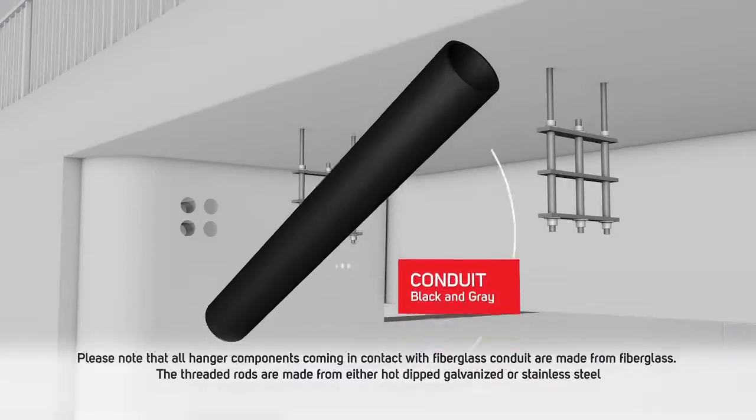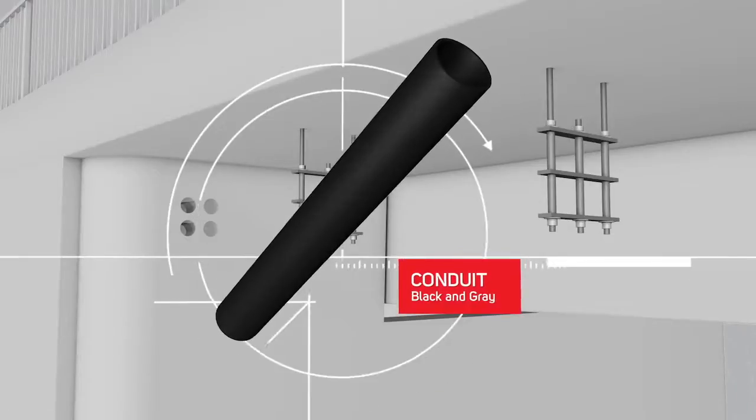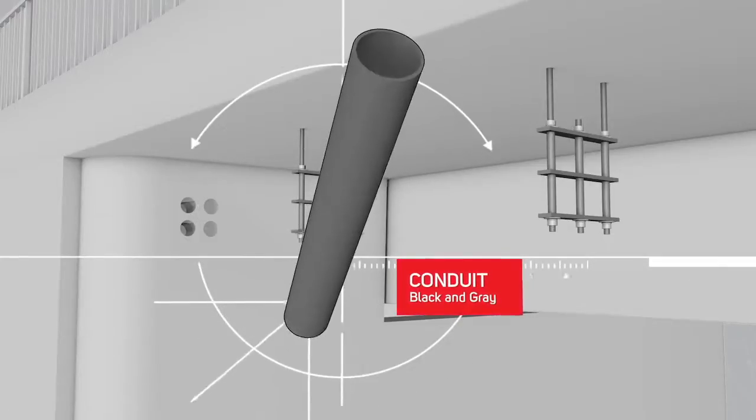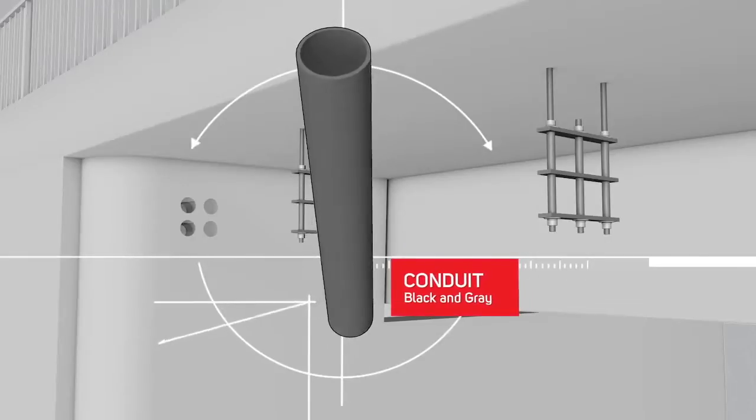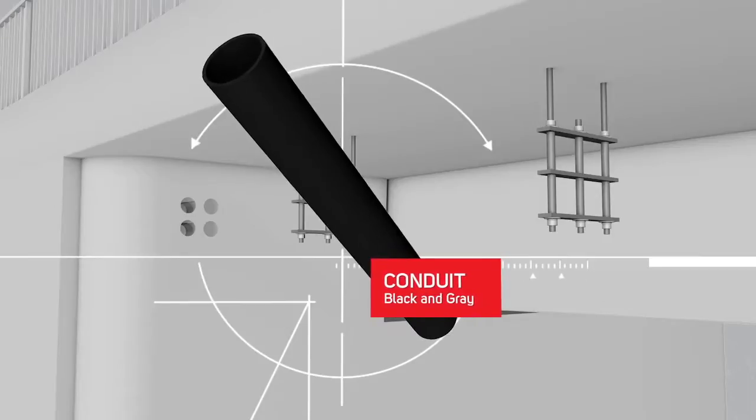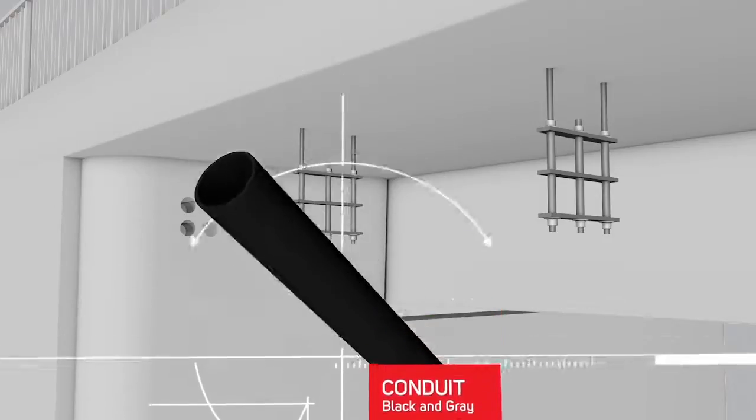Champion fiberglass conduit comes in standard black or gray with custom colors available. Each piece is designed with both a flared end and a bell end for ease of installation. Epoxy adhesive should be applied to the bell end in each application in order to properly secure the connecting pieces.